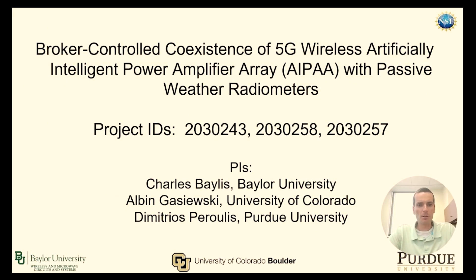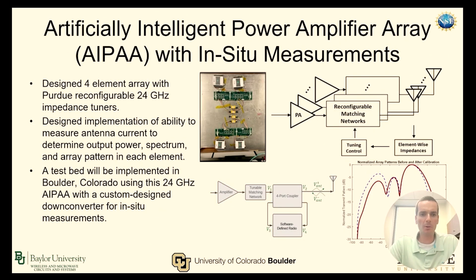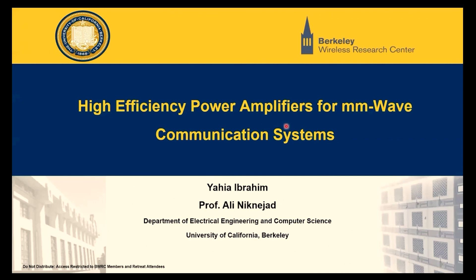My name is Charlie Bayless, and I'm serving as lead PI of a three-university effort between Baylor, Colorado, and Purdue to explore the coexistence of 5G wireless with passive weather radiometers using reconfigurable circuit arrays. The spatial spectral broker coordinates between 5G and passive radiometer systems and stipulates 5G transmission limits based on interference potential. Our team has designed a four-element array with reconfigurable 24 GHz impedance tuners, as well as the ability to measure antenna current and voltage to determine power, spectrum, and array pattern. We are currently implementing a testbed to assess the coexistence of this 5G array with a radiometer.